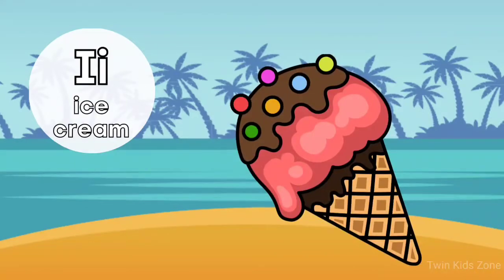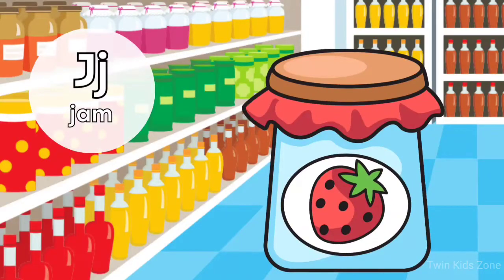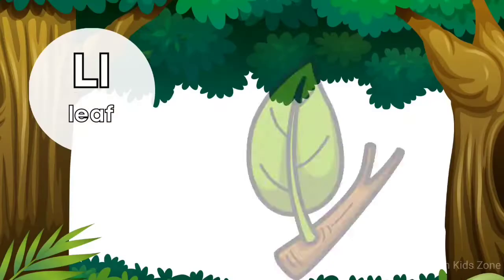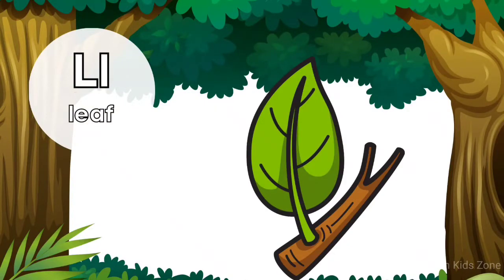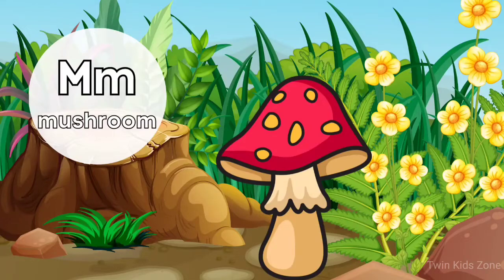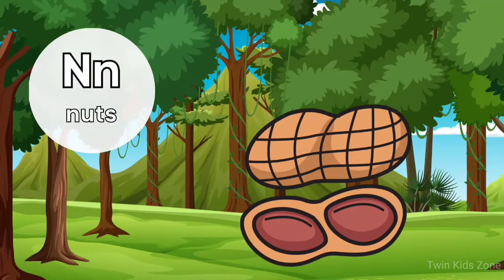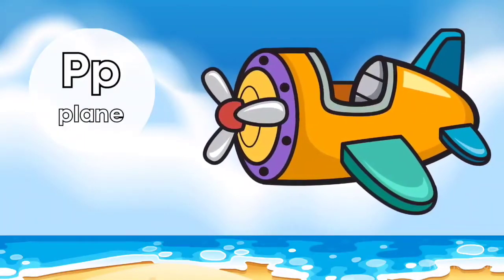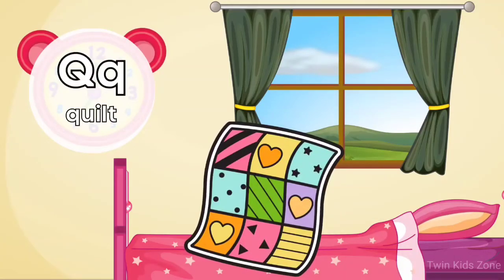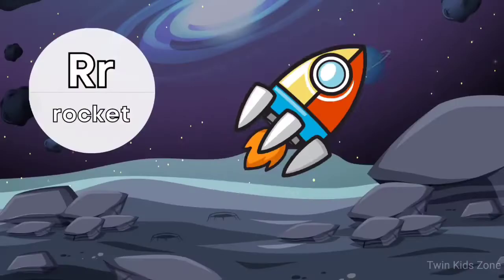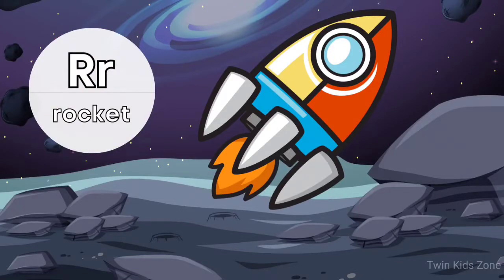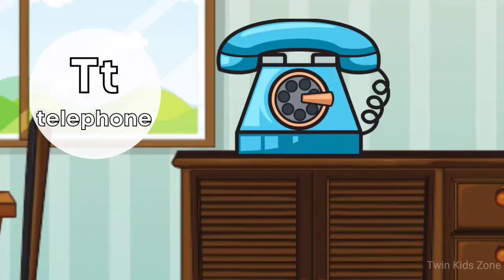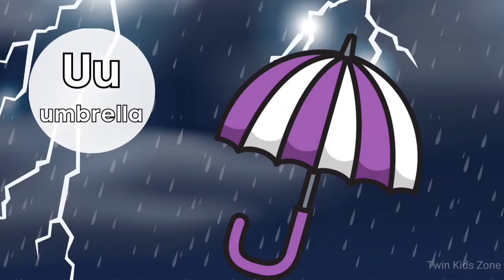I for ice cream, J for jam, K for kangaroo, L for leaf, M for mushroom, N for nuts, O for owl, P for plane, Q for quilt, R for rocket, S for sock, T for telephone, U for umbrella.